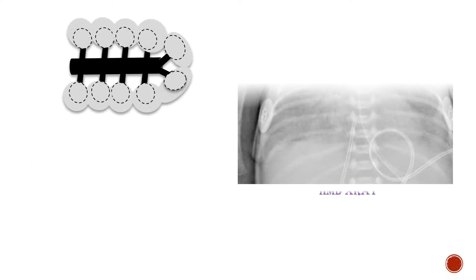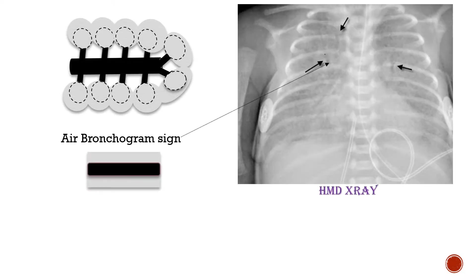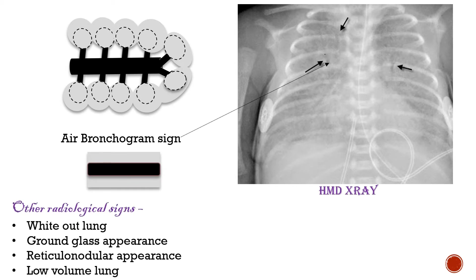You can see the air bronchogram sign on an x-ray film, marked by arrows. Other radiological signs in HMD include white-out lung, ground glass appearance, reticulonodular appearance, and low volume lung.